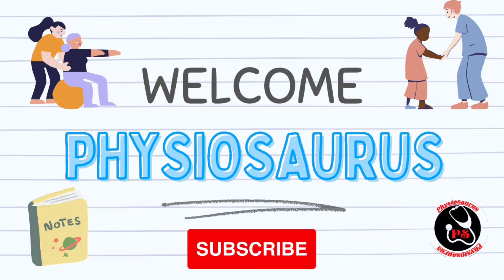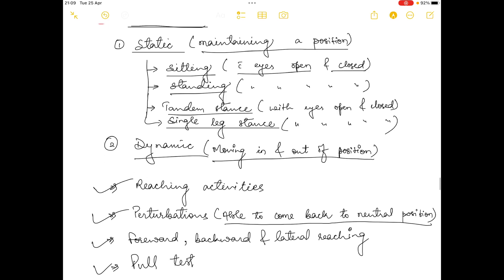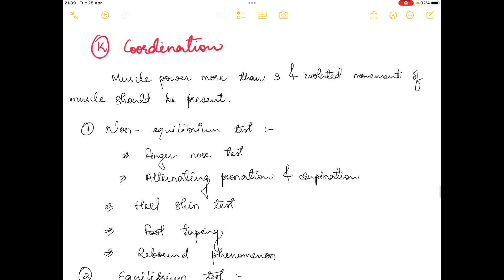Hello everyone and welcome to our channel Physiosaurus. In the previous video we were talking about neurological assessment for physiotherapists and we covered the topic up to balance. In this video I will continue from coordination. For coordination, muscle power more than three and isolated movement of the muscle should be present.